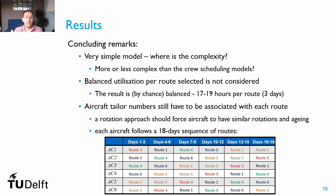To balance aging across the fleet, we rotate routes among aircraft. A potential solution is to create an 18-day sequence — six routes times three days — where aircraft one is allocated to, say, route three, then route one, then route four, six, two, five, and back to route three. Each aircraft cycles through all routes, so that after 18 days they all have exactly the same utilization, facilitating future maintenance check scheduling.